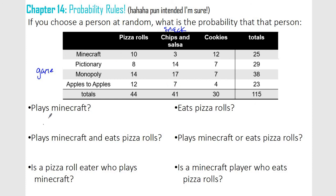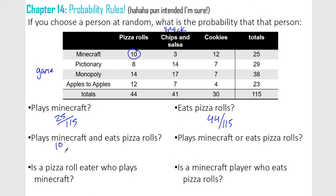Alright, so for the first one, you want to know the probability that someone plays Minecraft. So all we care about is Minecraft. We look down the total there — 25 people out of 115. Probability that you eat pizza rolls — pizza rolls is vertical — 44 total people out of 115. Plays Minecraft and eats pizza rolls: that's 10 people. So 10 out of 115.